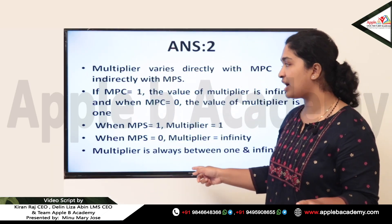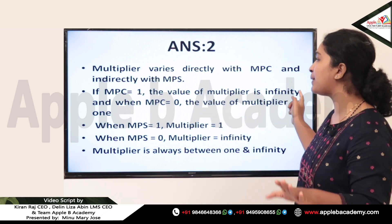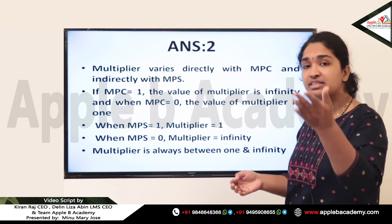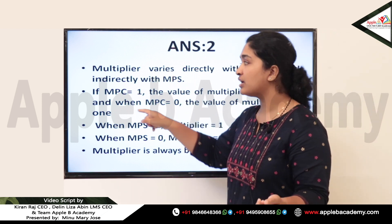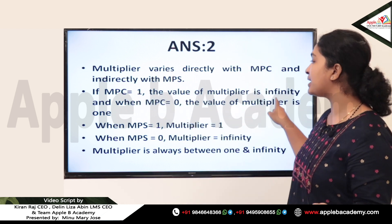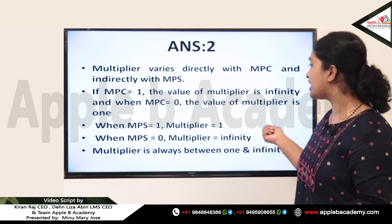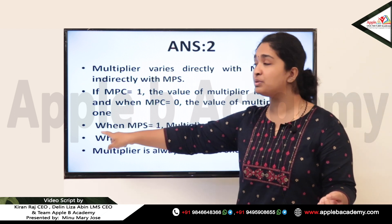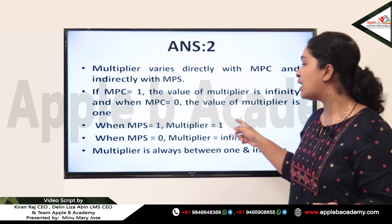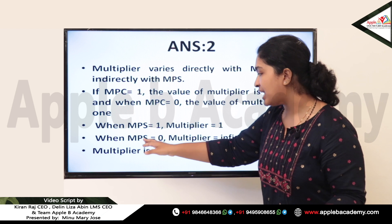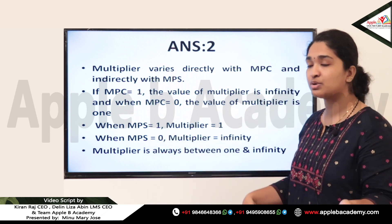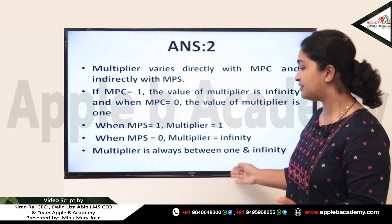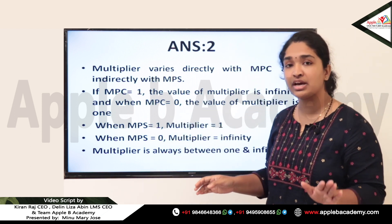Key conclusions: the multiplier varies directly with MPC and inversely with MPS. When MPC = 1, multiplier = infinity; when MPC = 0, multiplier = 1. When MPS = 1, multiplier = 1; when MPS = 0, multiplier = infinity. The value of the multiplier always lies between 1 and infinity. The answer for this question is Option 2.